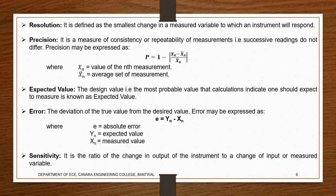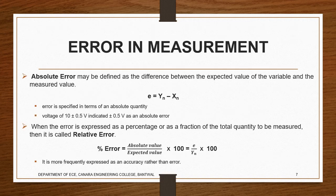Next we will look at sensitivity. It is nothing but the ratio of the change in output of the instrument to the change in input or measured variable. For example, we give an input of 2 volts and get some output. Now if we change the input from 2.1 to 2.2, the output has to vary accordingly. That concept is called sensitivity — the change in input with respect to the output has to be almost the same, and that determines less error.